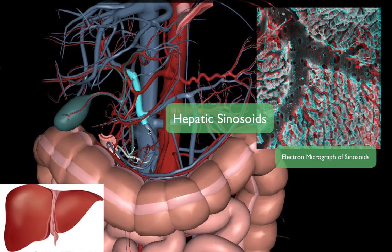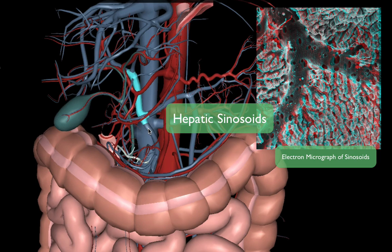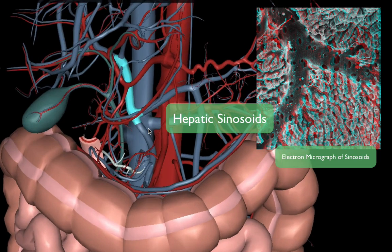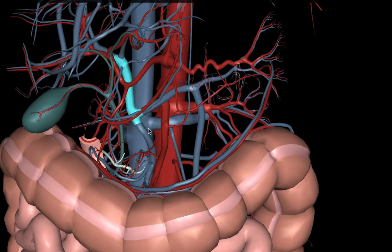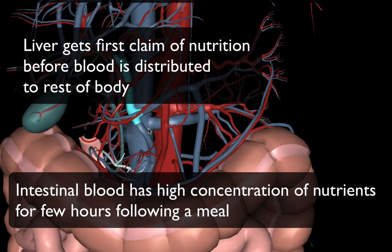Once blood enters the hepatic portal vein, it flows into innumerable microscopic hepatic sinusoids. These sinusoids play a very crucial part in further filtering the blood of bacteria that may have come from the intestinal tract, and also filtering out any additional nutrients not already absorbed there.